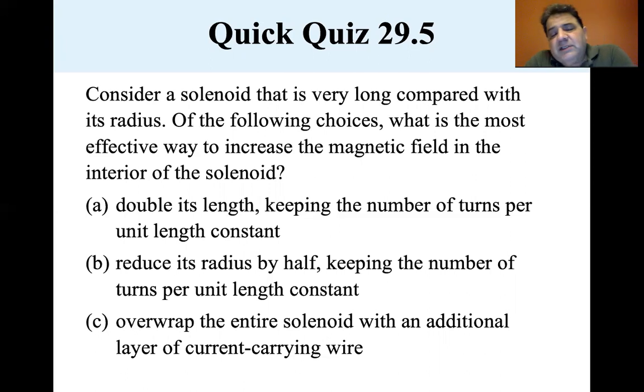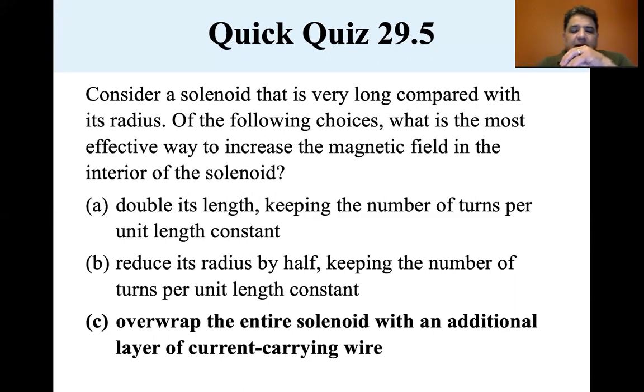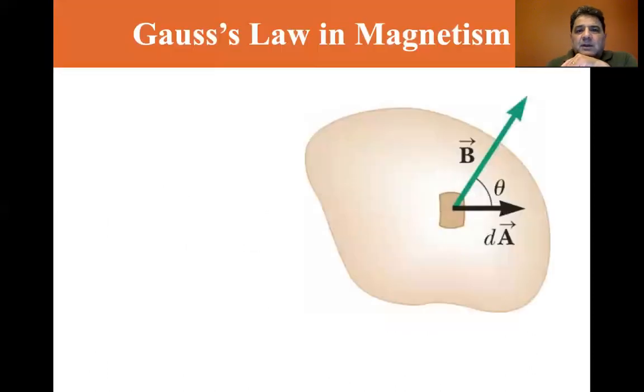Well, if you looked at the solenoids that we were working with, the coils that we were working with last Wednesday, you could see that they were overwrapped several times. So the answer is C, overwrap the entire solenoid with an additional layer of current carrying wire. And that's where we're going to stop section 29.4. Thank you, we'll see you next week.